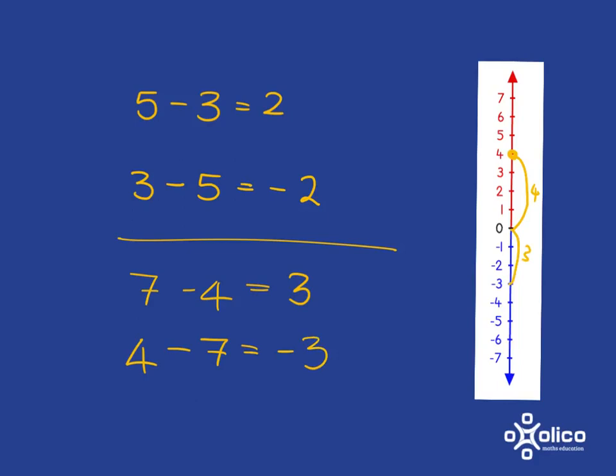Can you see the pattern that I am seeing here? That if 7 minus 4 is 3, then 4 minus 7 will be negative 3. And we can write this by saying 4 subtract 7 is going to give me the same answer as 7 subtract 4, except it will be negative.